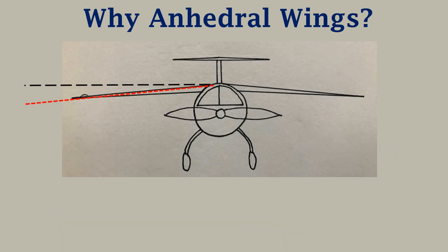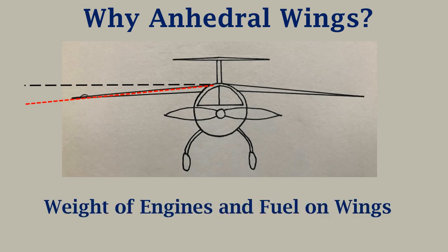A minor reason why some high wing aircraft tend to have anhedral wings is because the wings support the weight of the engines and carry the fuel, which can cause the wing to bend downward.